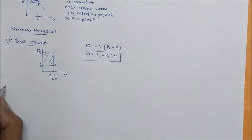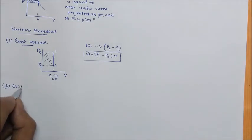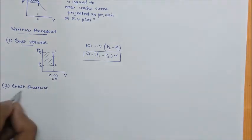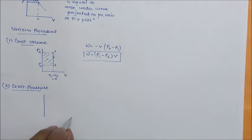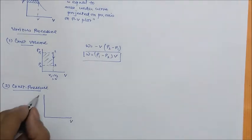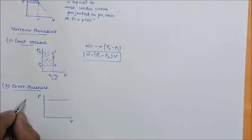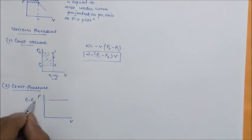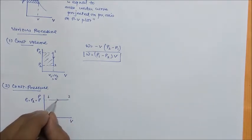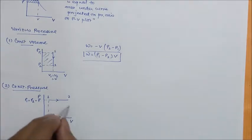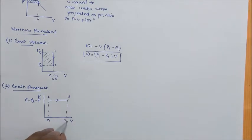The next process is constant pressure. Again, PV plot. As it is a constant pressure, then on the pressure axis, the pressure will be constant: p1 is equal to p2 is equal to p, and the process is going like this. The corresponding volumes will be v1 and v2 for state two.